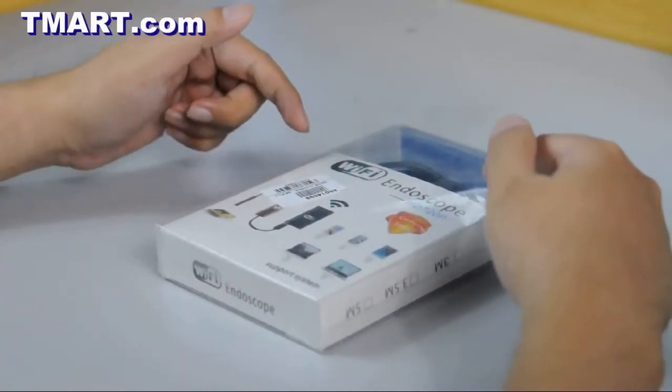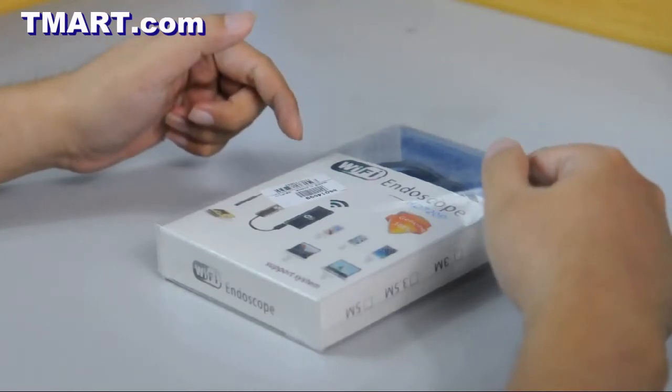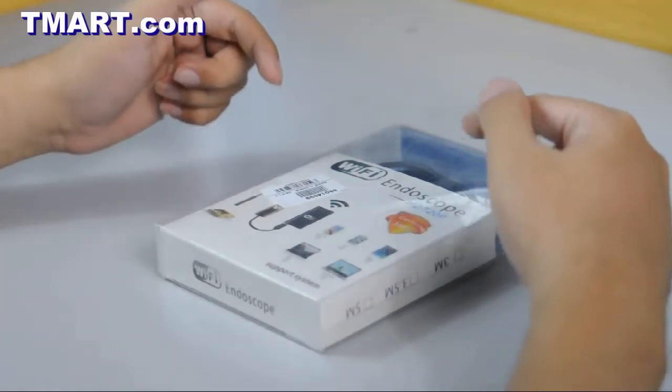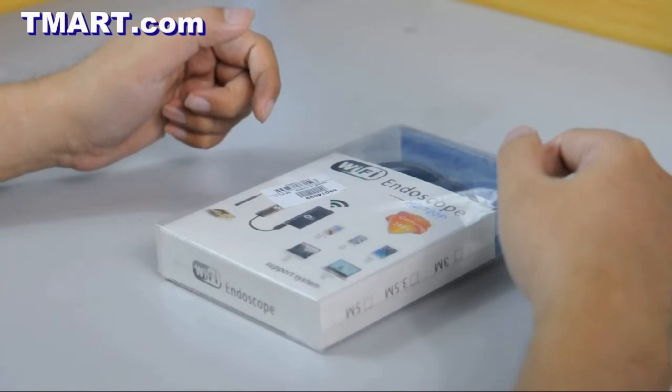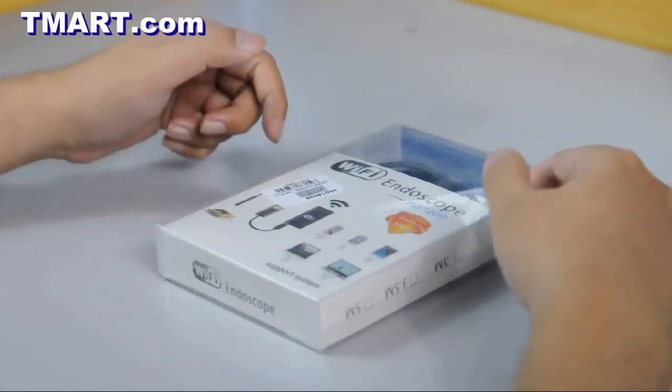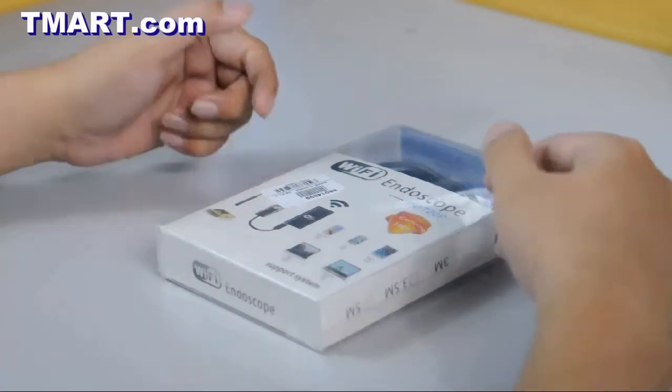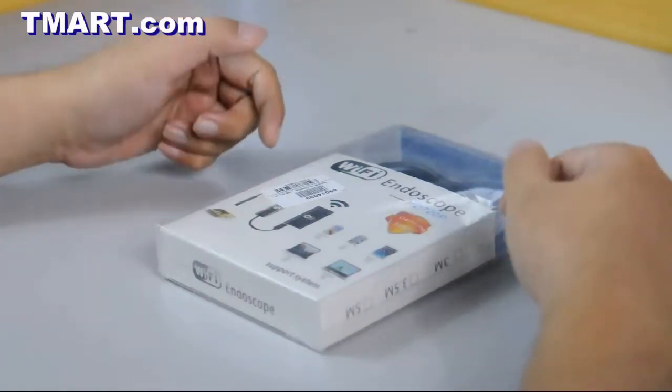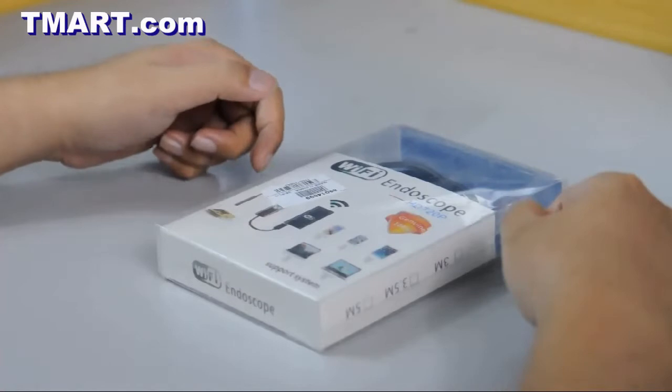Inside this box is a wireless endoscope camera that can be used to do inspection in tight spaces. A cool feature about this camera is that it can stream its image to your smartphones or tablet devices without the need of a cable.